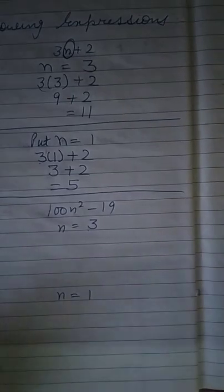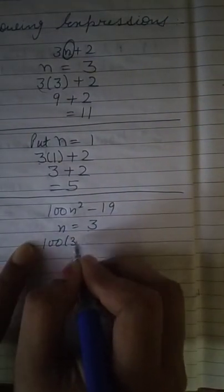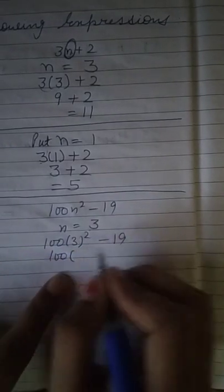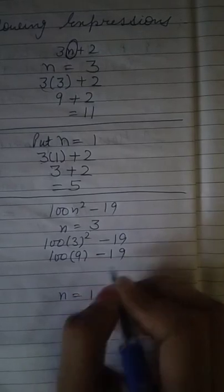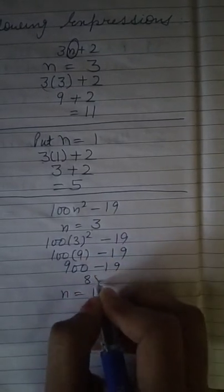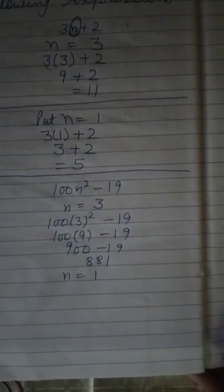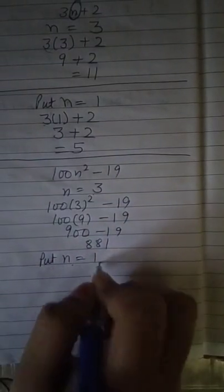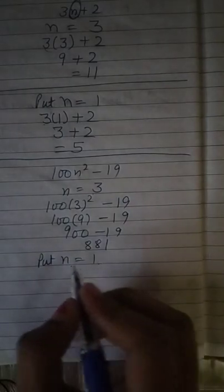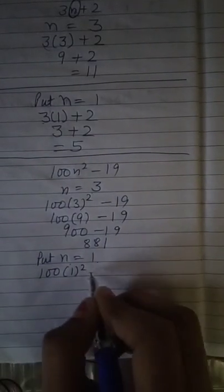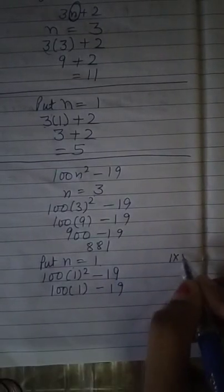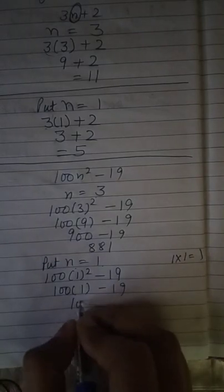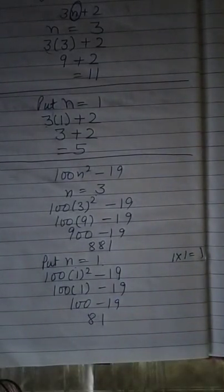Next is n equals to 3. We replace n with 3. 3 square means you multiply 3 by 3. 3 multiply 3 equals 9. Multiply 3 two times, we get 9. 900 minus 19 equals 881. Next part is if I have to replace n with 1. 1 square means 1. 1 multiply 1 equals 1. 100 minus 19 is 81. Is it clear?